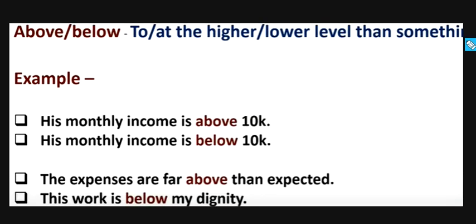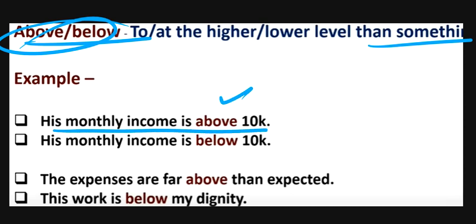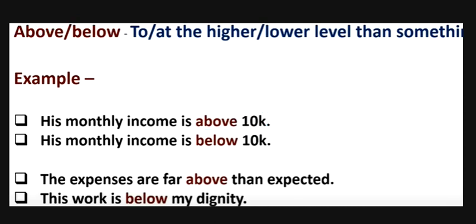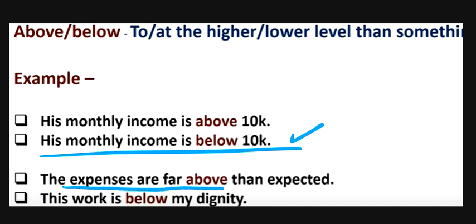So if you compare to someone, you use above and below. For example, his monthly income is above 10k. If you show the level above or below, we use above and below. For example, his monthly income is below 10k. His expenses are far above than expected. This work is below my dignity.